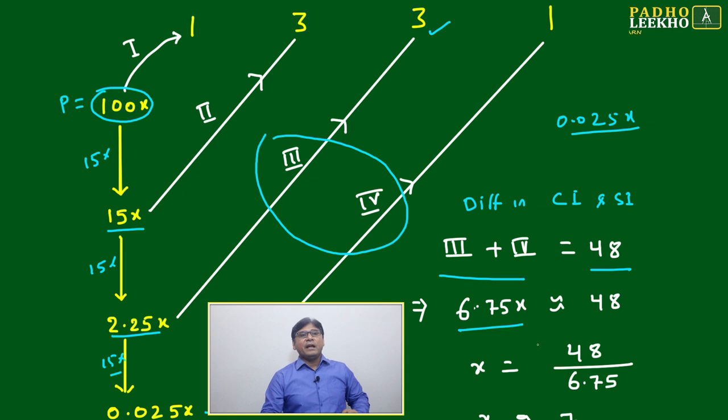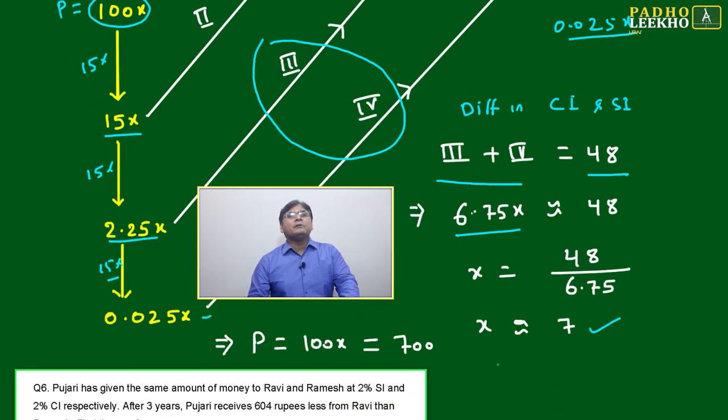x equals 48 divided by 6.75, so x will be approximately equal to 7. The principal amount is 100x, not 7, so it will become 100 times 7, which is approximately 700.